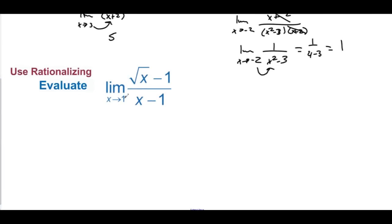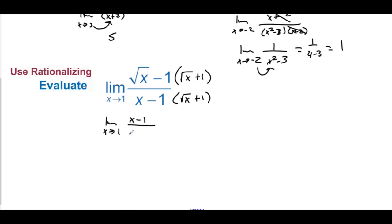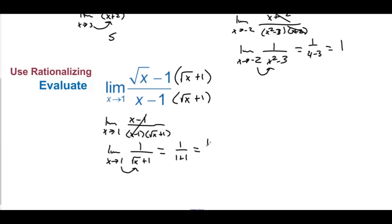Use rationalizing to evaluate the limit as x approaches 1 of (√x − 1)/(x − 1). Plugging 1 into the denominator gives 0, so we multiply by the conjugate (√x + 1)/(√x + 1). This gives the limit as x approaches 1 of (x − 1) over [(x − 1)(√x + 1)]. The (x − 1) terms cancel, leaving the limit as x approaches 1 of 1/(√x + 1). Plugging in 1 gives 1/(1 + 1) = 1/2.